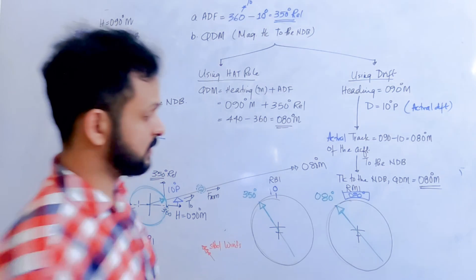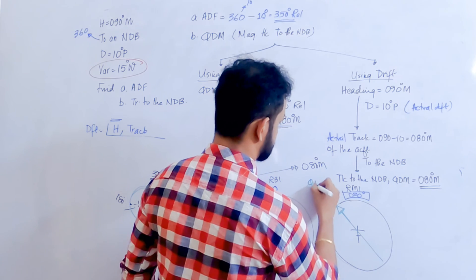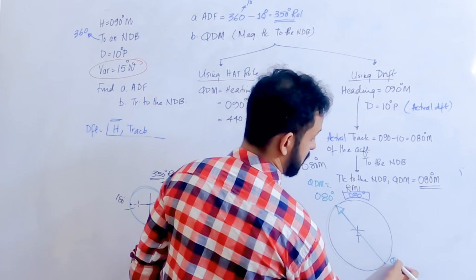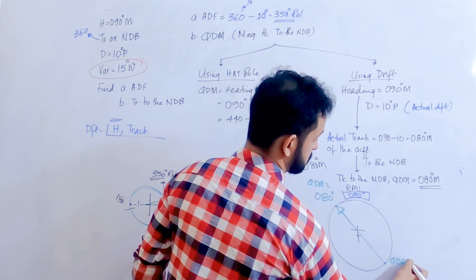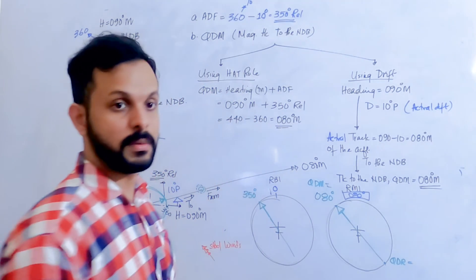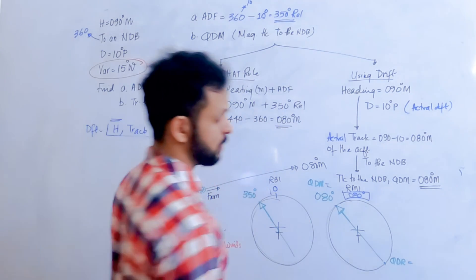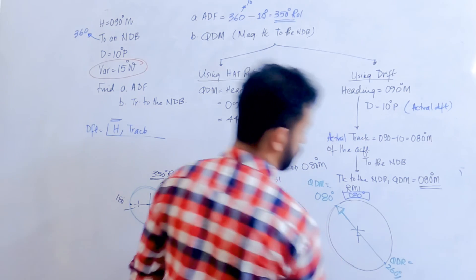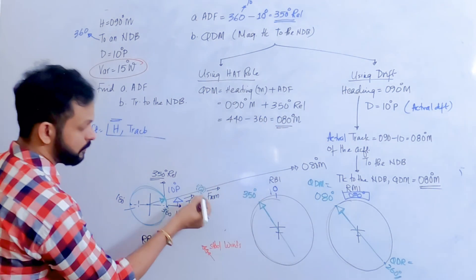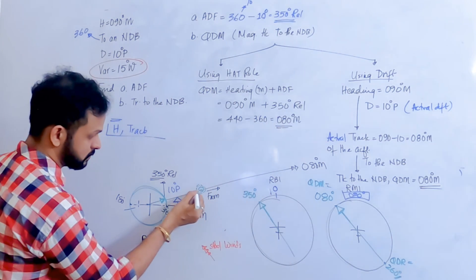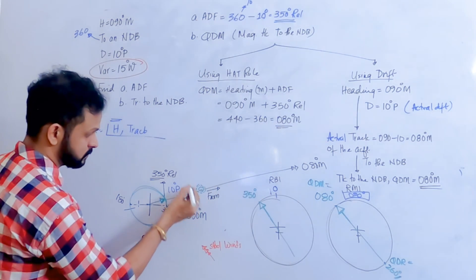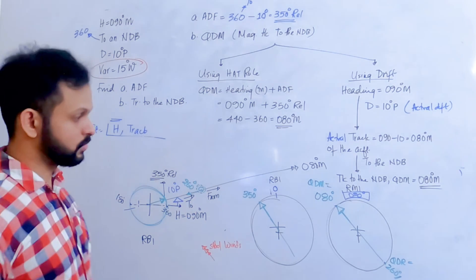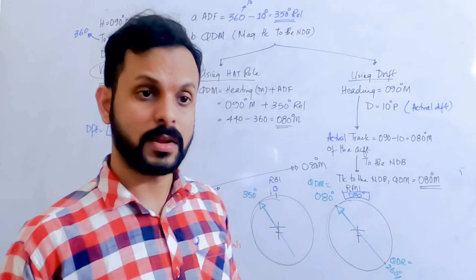The tail of the RMI is going to indicate QDR, which is 080 plus 180 equals 260 degrees — the track from the station. That is going to be 260 degrees.